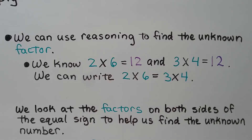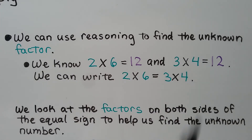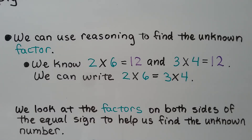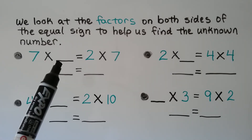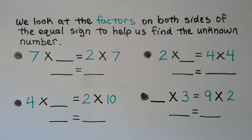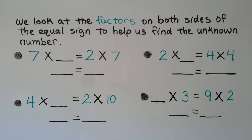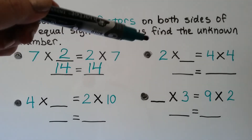We can use reasoning to find the unknown factor. We know that 2 times 6 is equal to 12, and 3 times 4 is equal to 12, so we can write 2 times 6 is equal to 3 times 4. We look at the factors on both sides of the equal sign to help us find the unknown number. For example: 7 times an unknown number is equal to 2 times 7. If we think about the commutative property, we'd know that we could put a 2 there. Because 7 times 2 is equal to 14, and 2 times 7 is equal to 14.